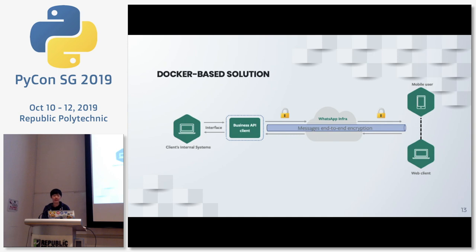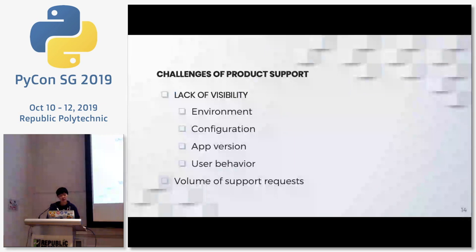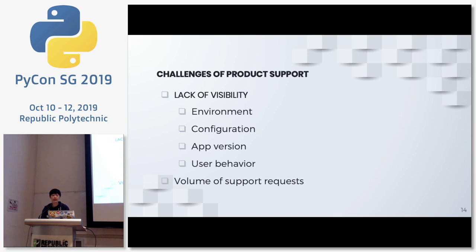Like all traditional APIs, businesses not only need to integrate with the API we provide, but also need to manage the Business API client — installing the Docker containers inside their data centers. So we come back to the challenges of product support: once we hand the containers over to businesses, we lose all visibility into where they are running them, what configuration their servers have, which version they are using. We don't want to capture user behavior because WhatsApp is very privacy-focused. And being WhatsApp, the volume of support requests — even in closed beta — is growing by the day.